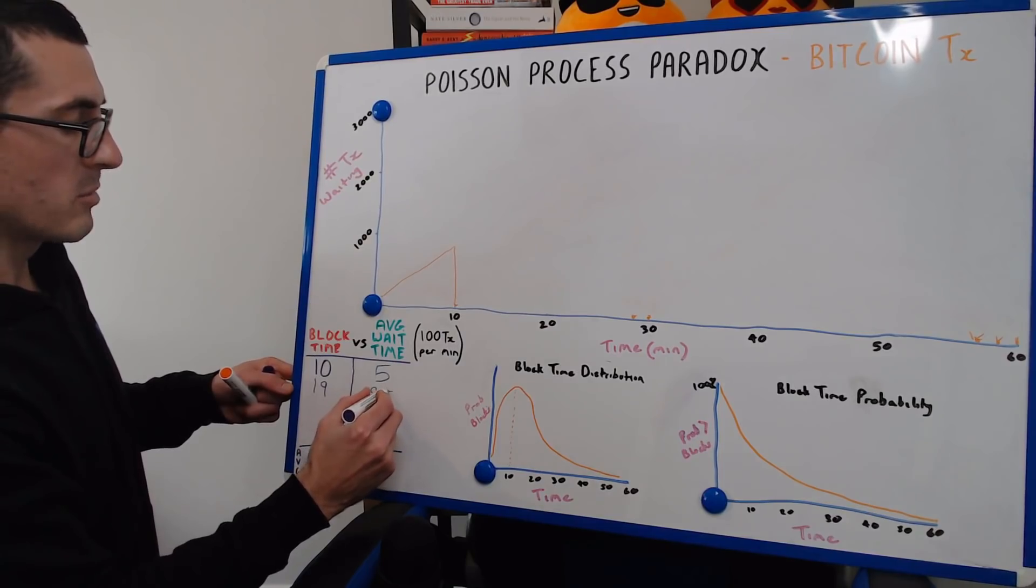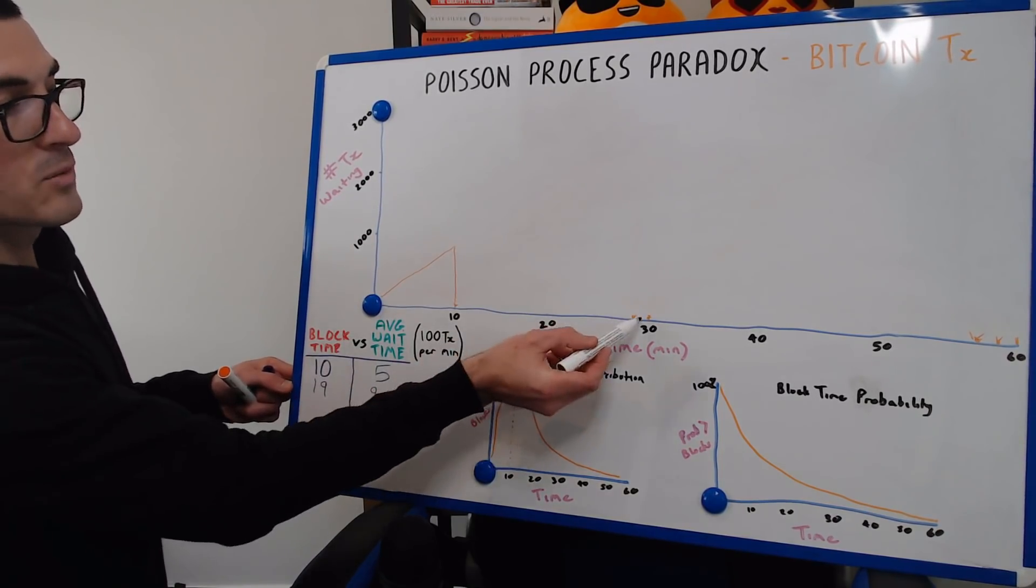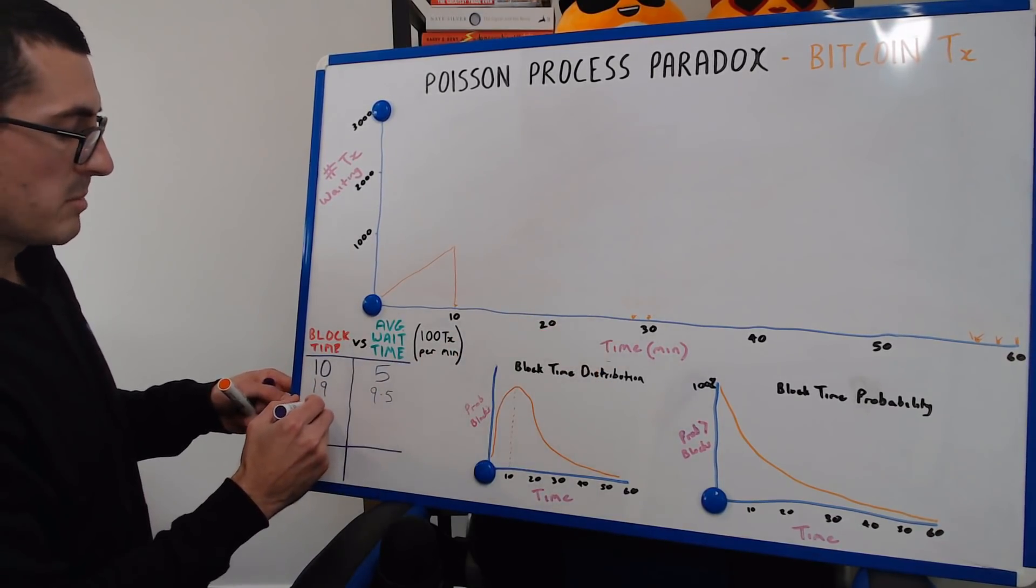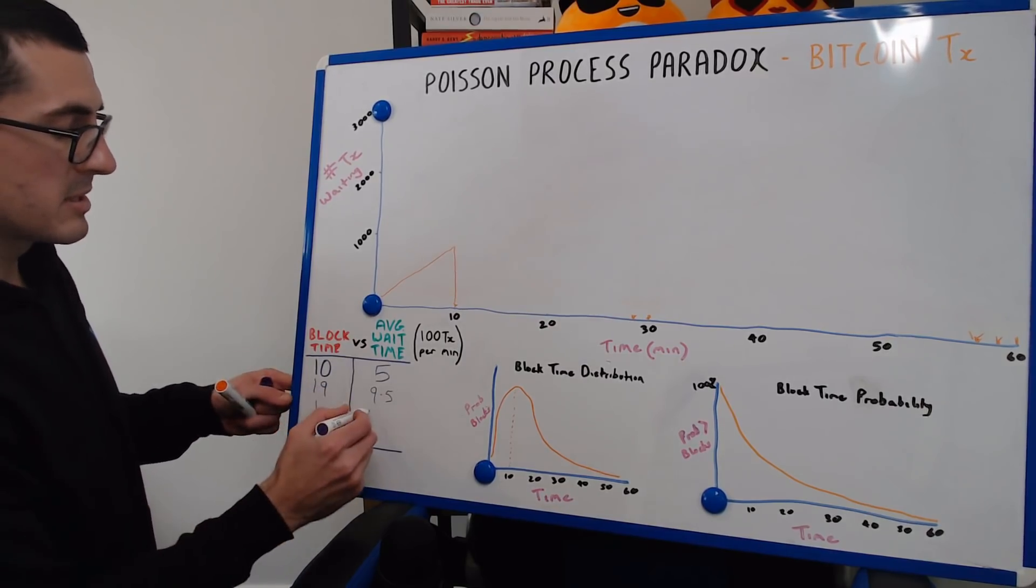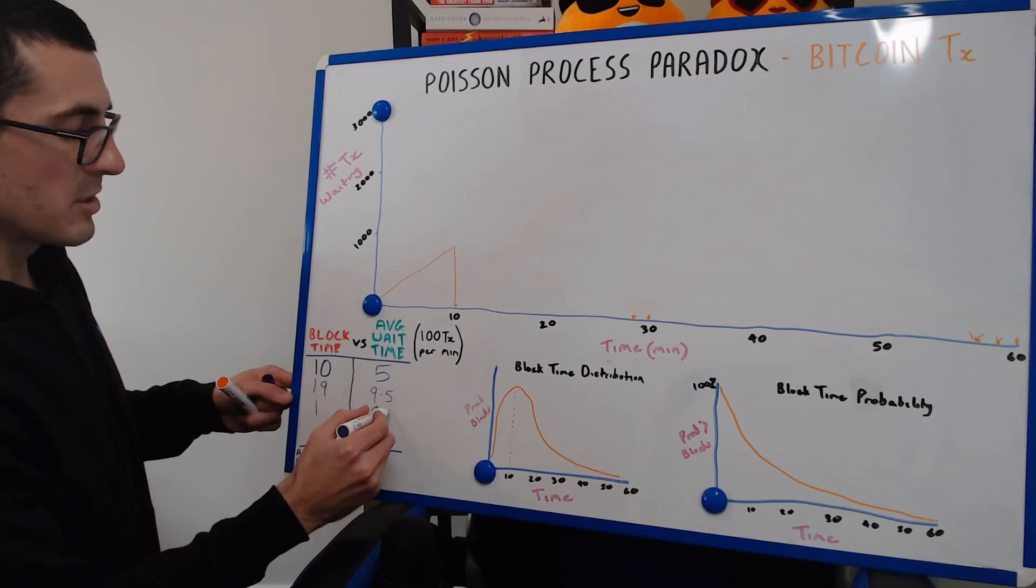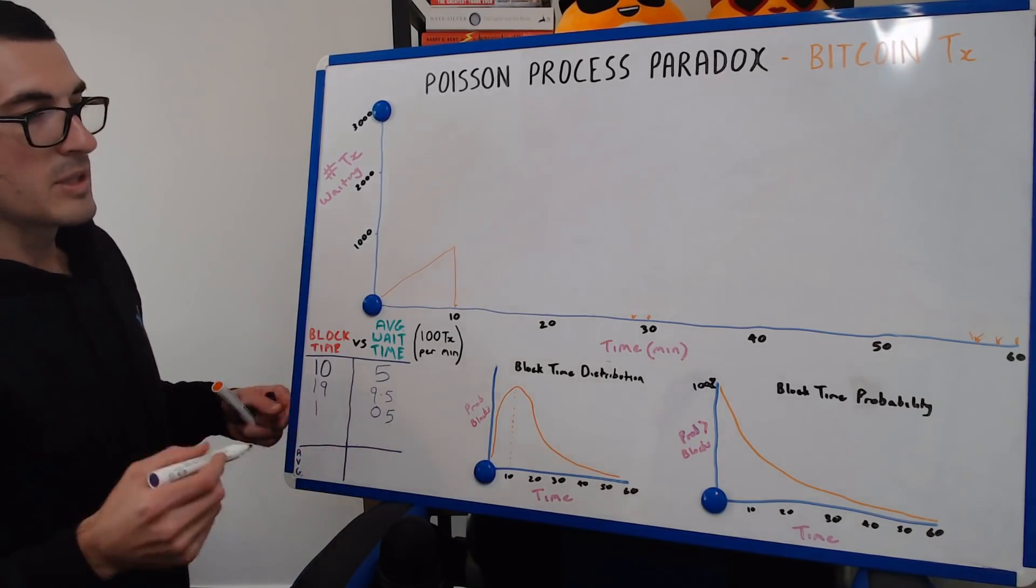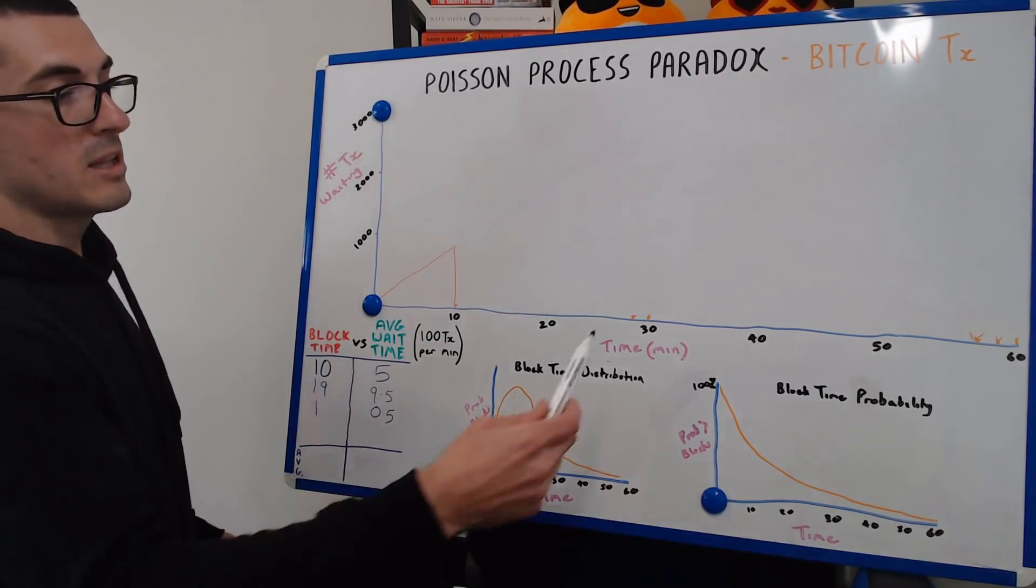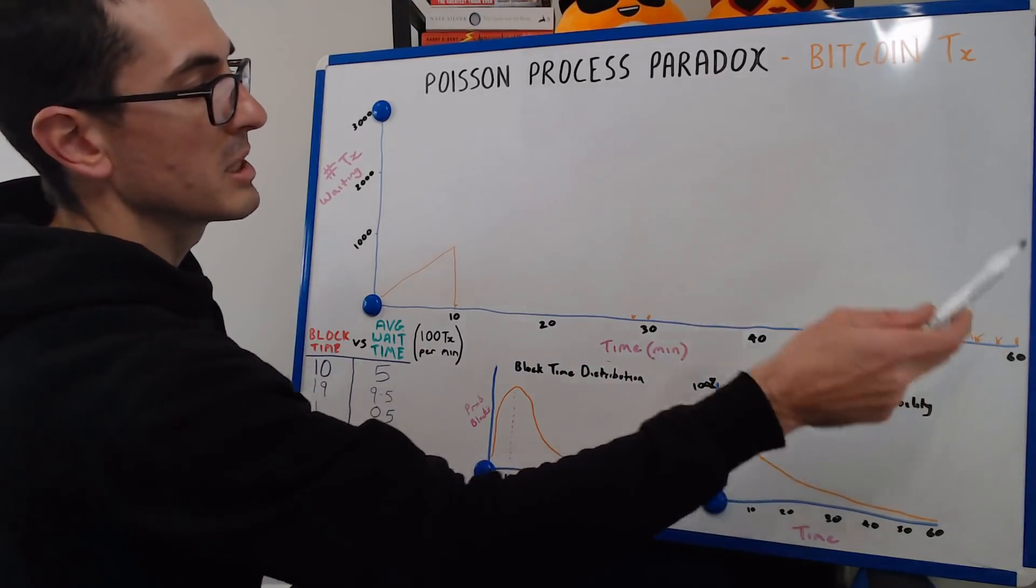And then the average wait time for those people is going to be right in the middle of that 19-minute mark at 9.5 minutes. We then have a really short little block there, one minute long, to bring the average back to 10 minutes. So those people had to wait an average of half a minute. We then have a really long block, one of those outliers. Let's say that we had a 28-minute long block.